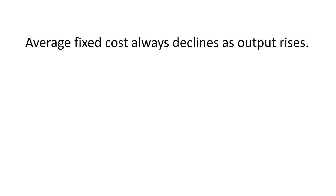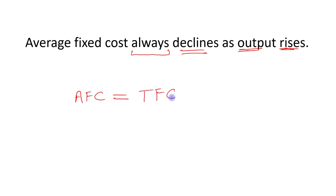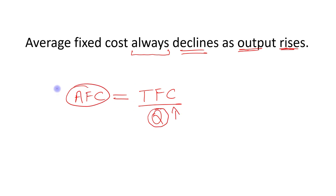Average fixed cost always declines as output rises. Average fixed cost is total fixed cost divided by output level. When the quantity of output increases, average fixed cost declines because your numerator — the fixed cost — is fixed.